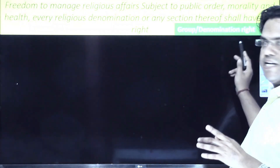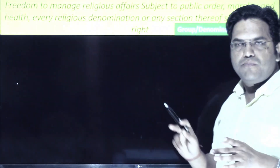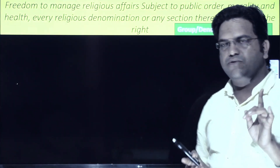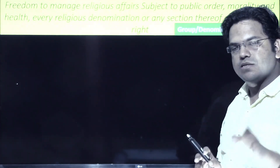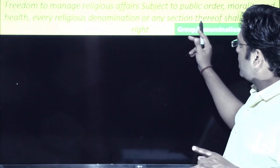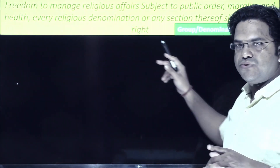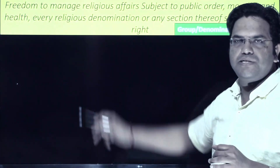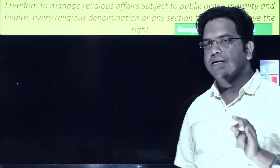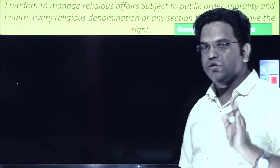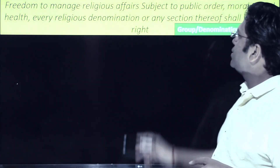Article 26 extends rights to a group or religious denomination — indicated by the green strip you can see on the slide. In Article 25, it was an individual right. I had mentioned I would explain this in Article 26, and Article 26 is doing exactly that — extending these rights to a group or religious denomination.